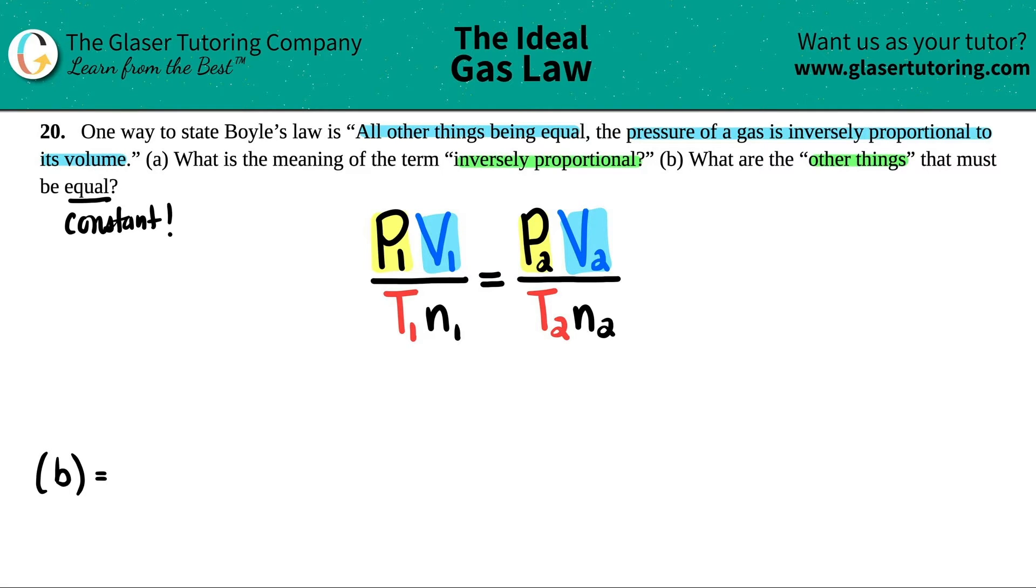Well, since Boyle only talks about pressure and volume, I don't care about T and I don't care about n. So the other things are going to be temperature, that's T, and n is the number of moles.